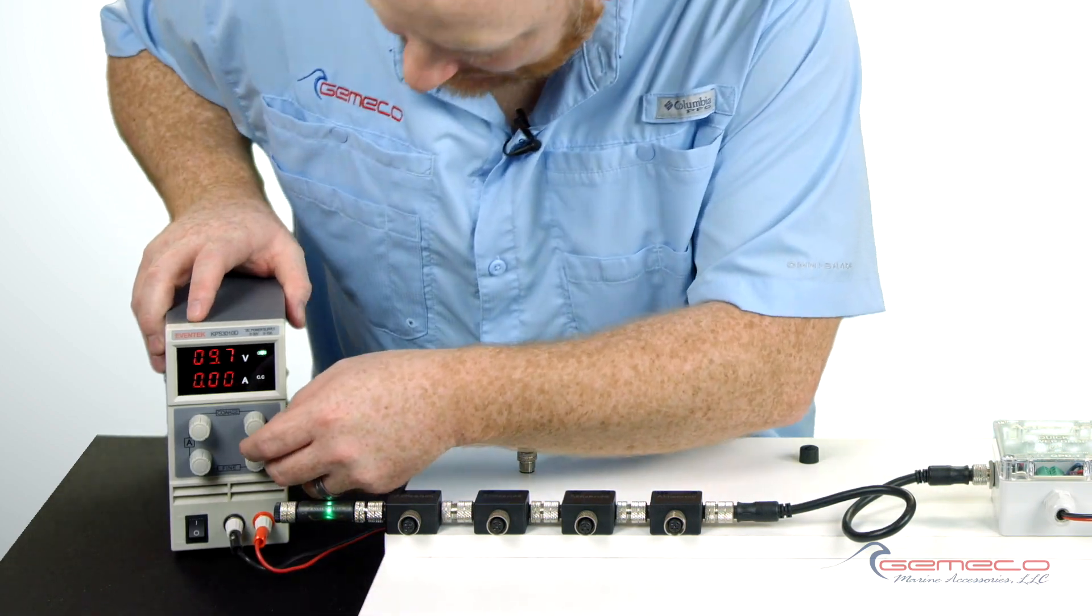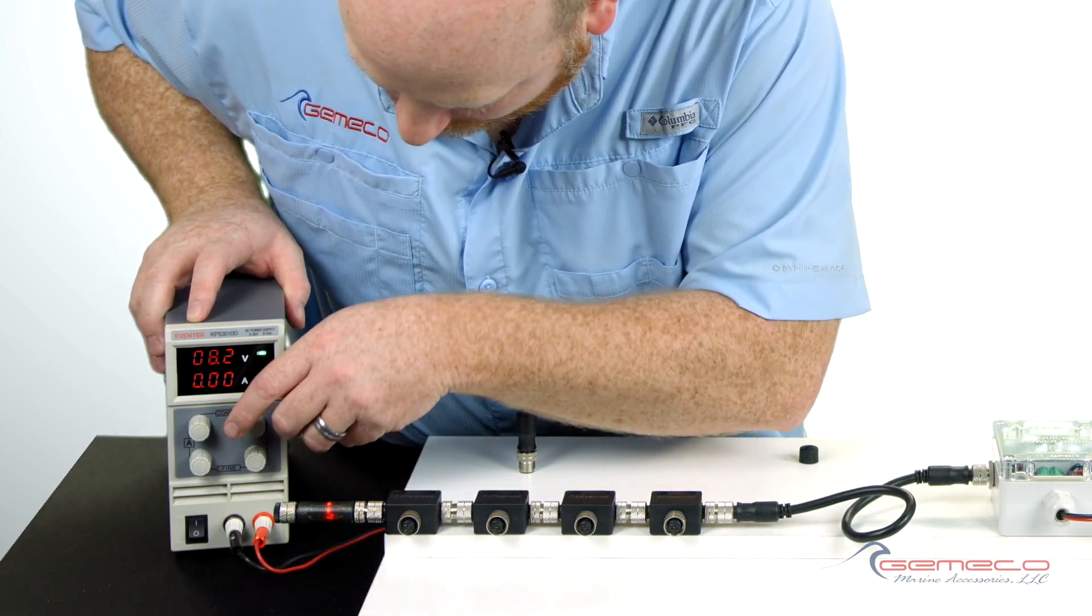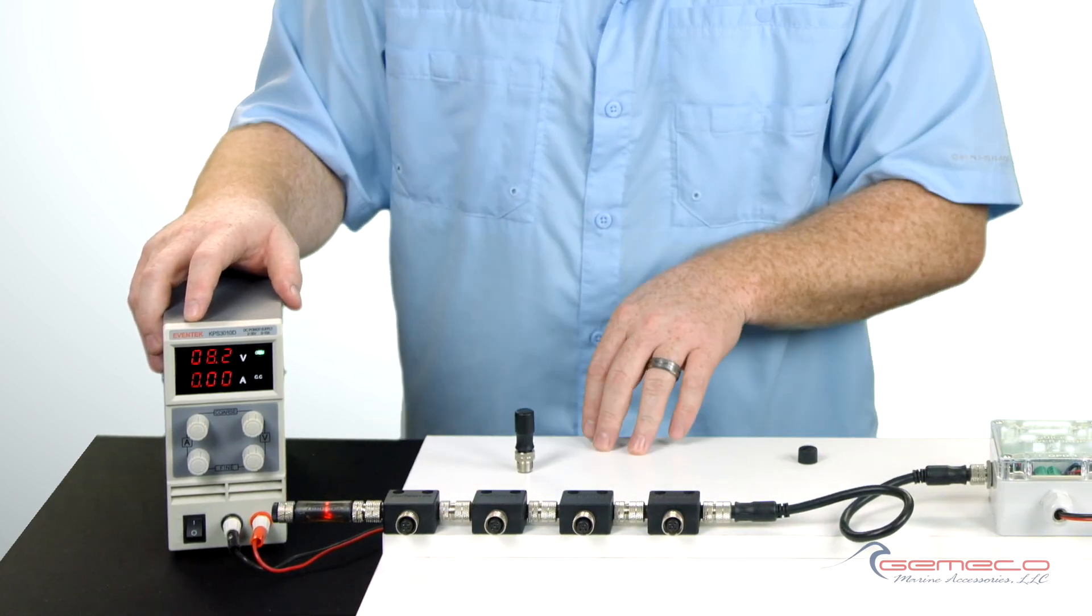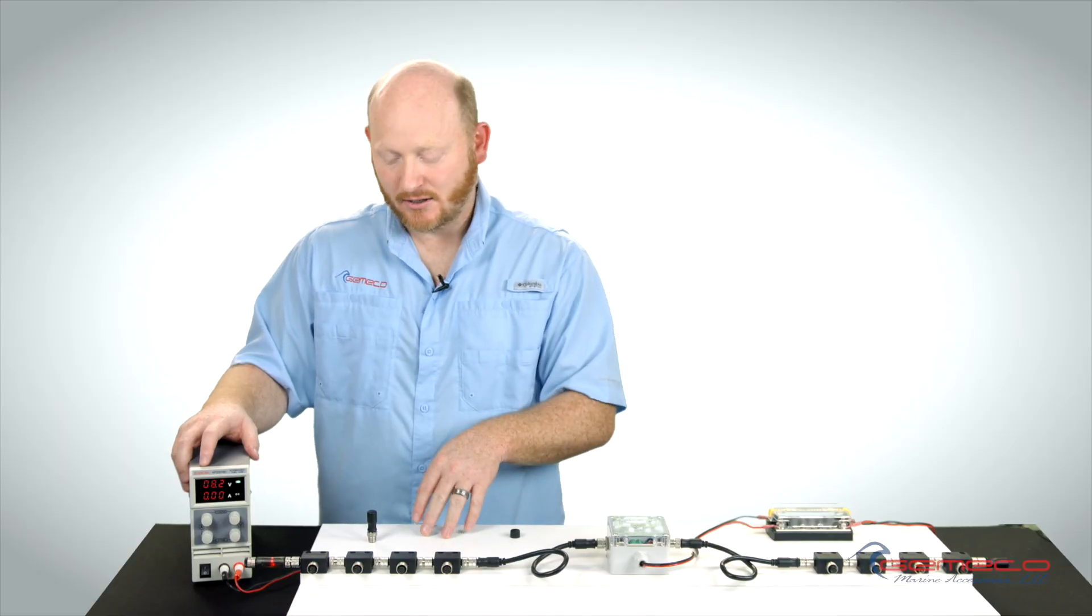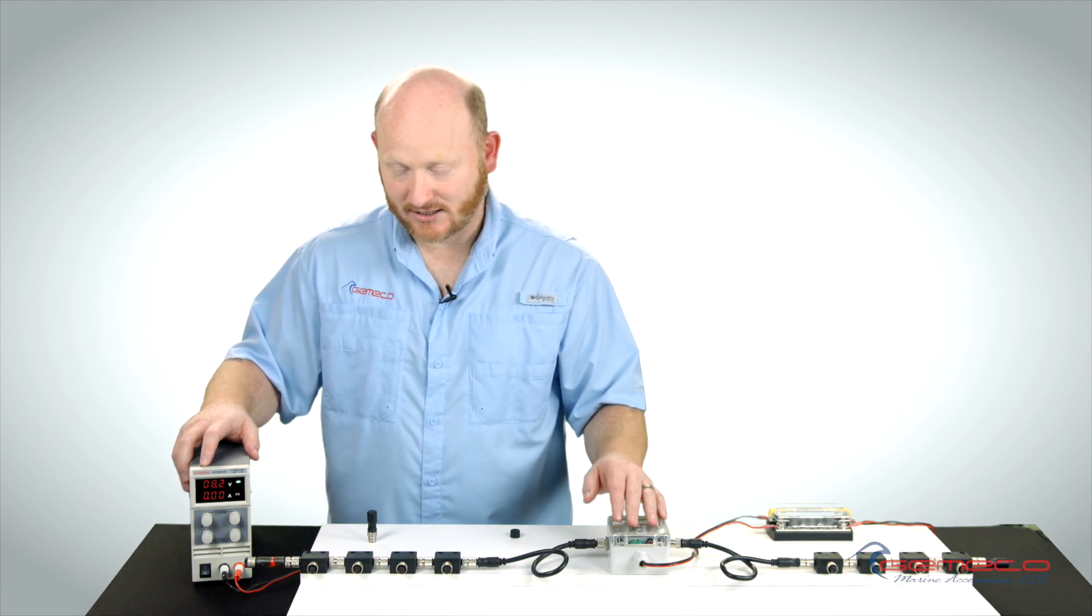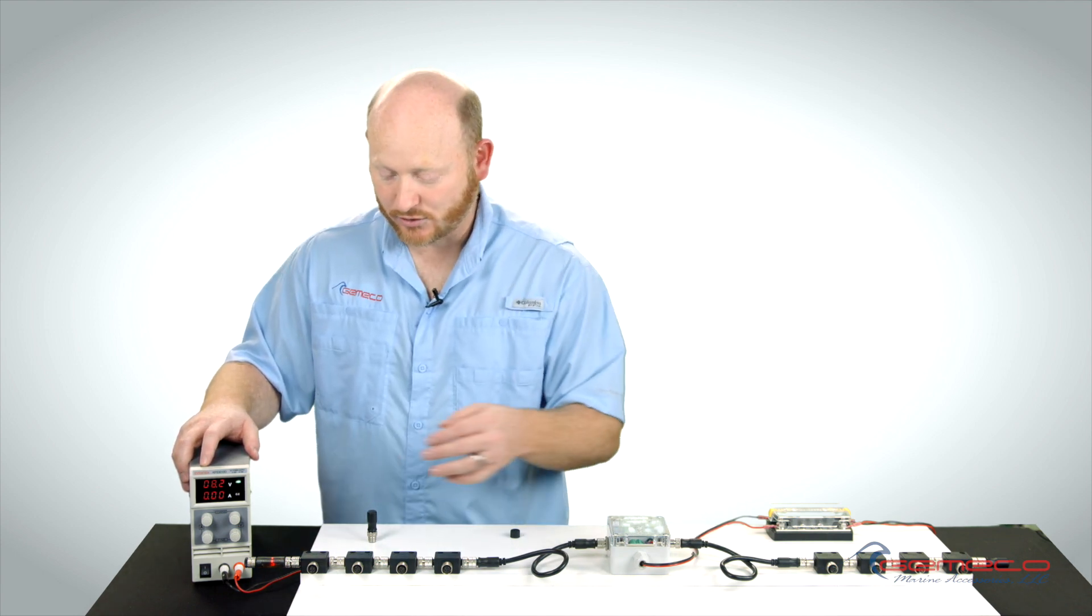We take our variable DC power supply, we remove it from 12 volts to under 9, automatically you get a red indicator. The red indicator shows us that there's a problem within our 12 volt section of this network, we really need to evaluate what's going on.